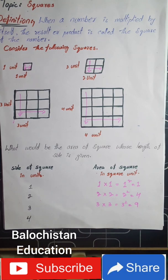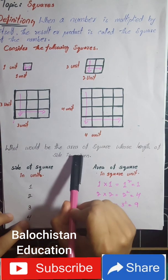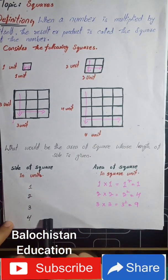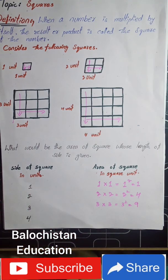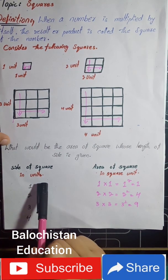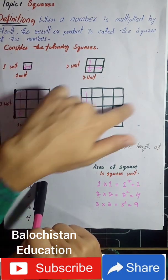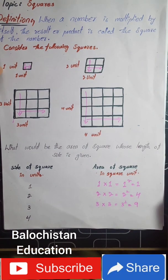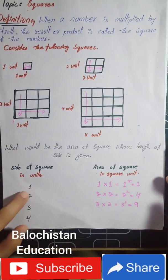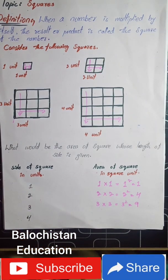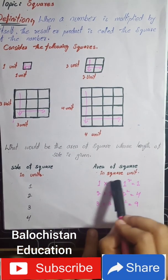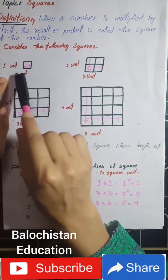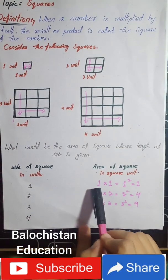Now, how do we find the area of a square? Given the length of the side of a square in units, we need to find the area in square units. The sides shown are one unit, two units, three units, and four units. To find the area, we multiply the same number by itself.